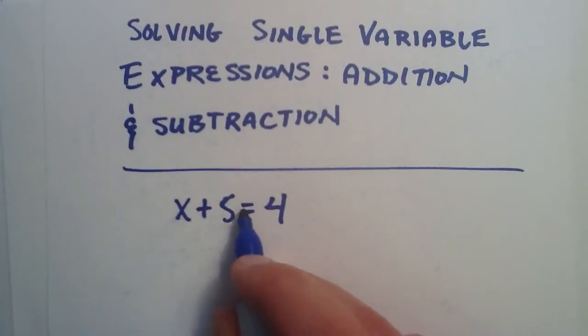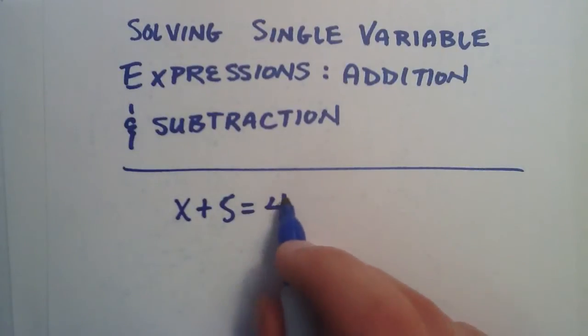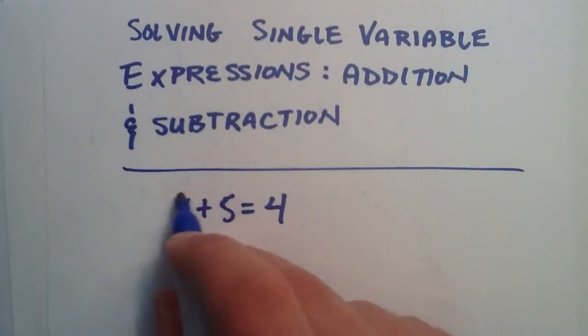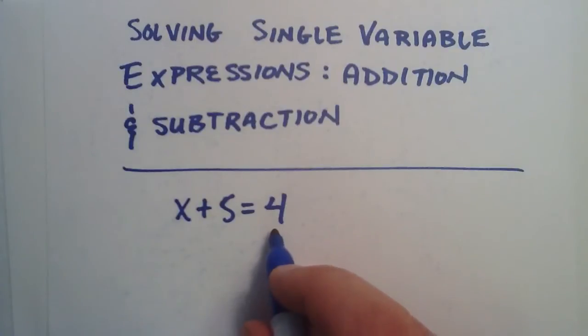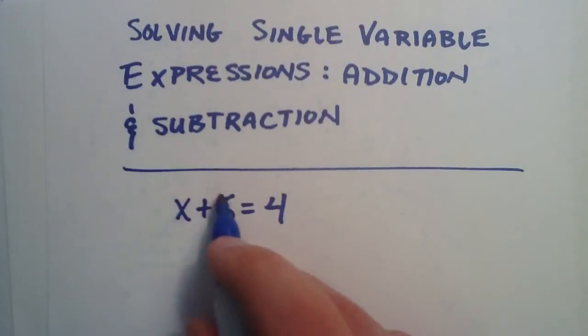Now, this equal sign shouldn't be overlooked. It basically means that everything on this side has the exact same value as everything on that side. So, that means that if we were to take away 2 from both sides, well, 4 minus 2 equals 2. That means that taking away 2 from this side should also give us the value of 2.